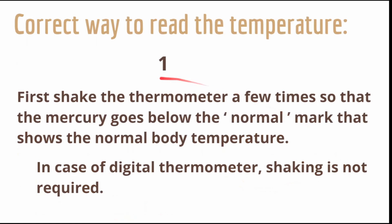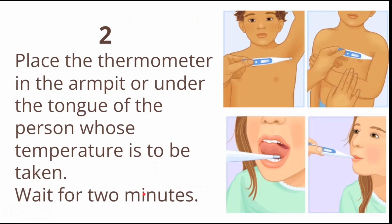Let us see the correct way to read the temperature. First, shake the thermometer for a few seconds so that the mercury goes below the normal mark that shows normal body temperature. In the case of a digital thermometer, shaking is not required. Second, place the thermometer in the armpit or under the tongue of the person whose temperature is to be taken, and wait for two minutes.